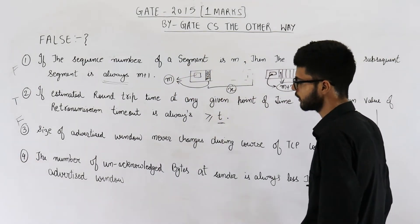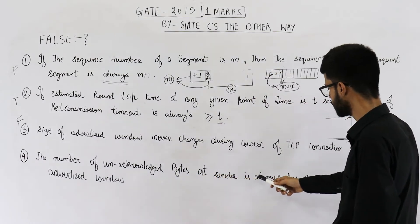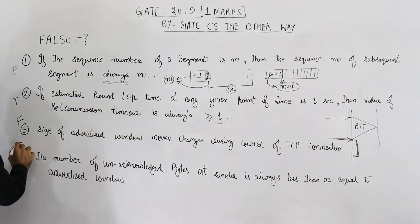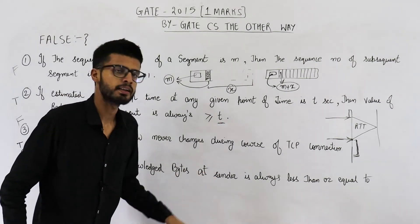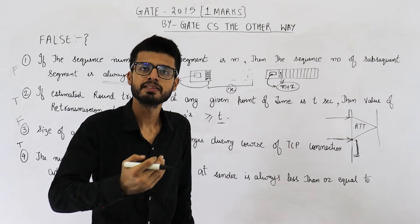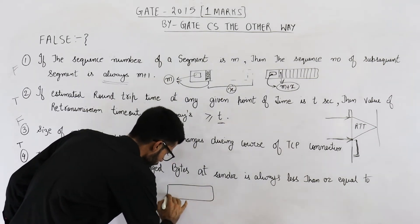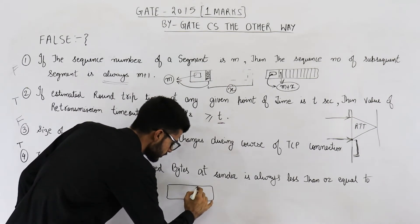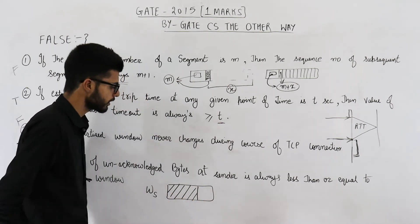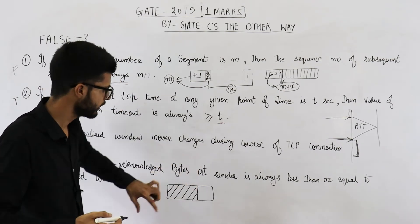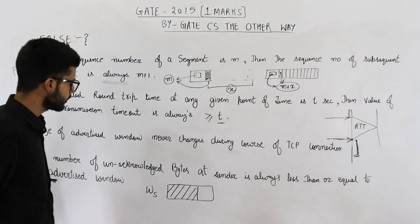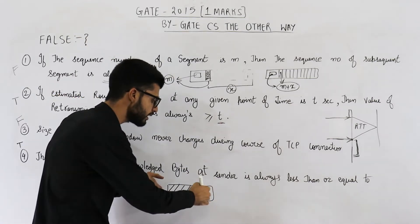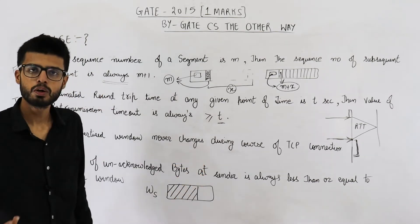Statement number 4 says: the number of unacknowledged bytes at the sender is always less than or equal to the advertised window. This is true. All unacknowledged data at the sender must be placed in the sender window WS, so unacknowledged bytes are always less than or equal to the sender window size.